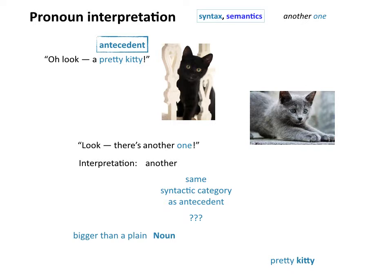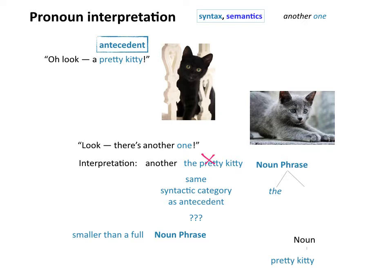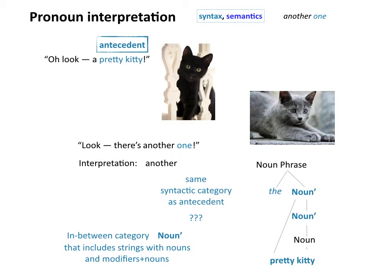Well, it seems to be bigger than a plain noun, because 'kitty' is a noun but 'pretty' is an additional adjective. So it's definitely bigger than a plain noun. It seems to be smaller than a full noun phrase, because the full noun phrase like 'the pretty kitty' will include the word 'the.' We can't say 'another the pretty kitty' — that's terrible. So 'pretty kitty' is somehow smaller than a full noun phrase — something in between.